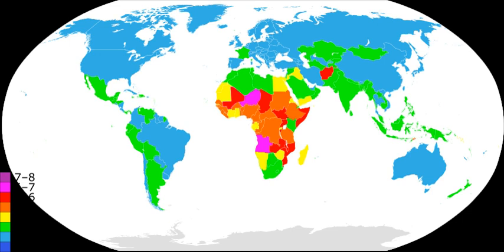However, in the period from the 1950s to the 1980s, concerns about global population growth and its effects on poverty, environmental degradation and political stability led to efforts to reduce human population growth rates. More recently, some countries, such as China, Iran, and Spain, have begun efforts to increase their birth rates once again.